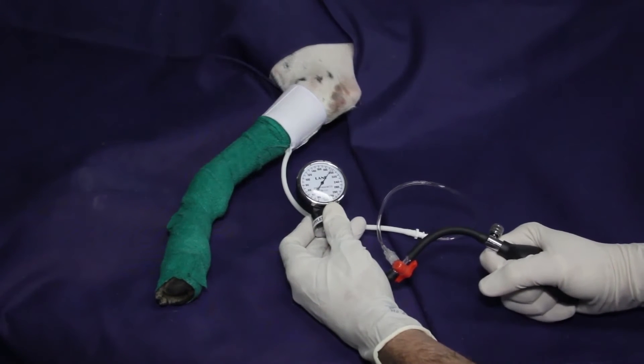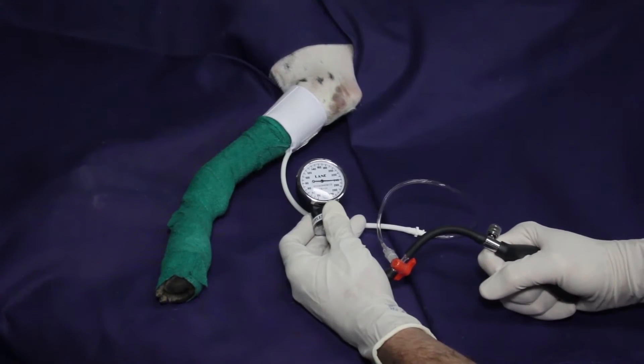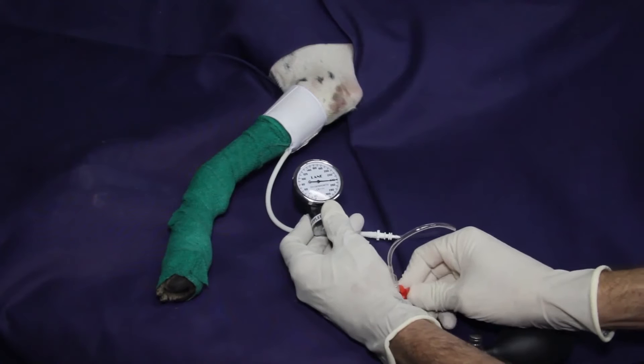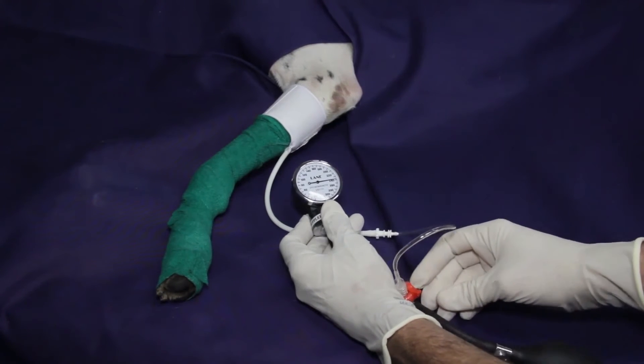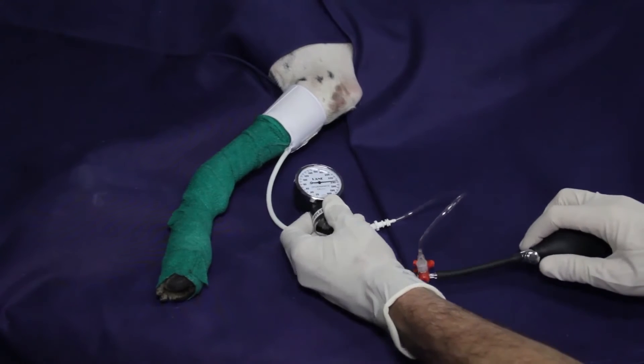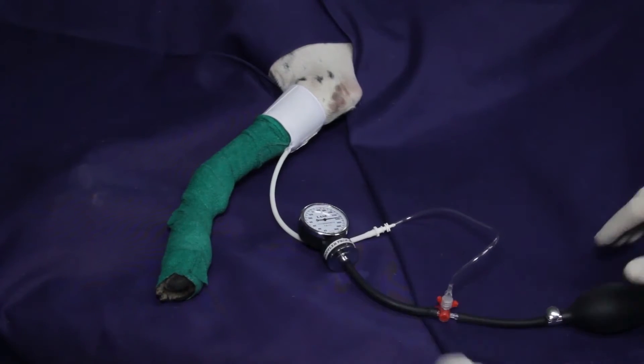The cuff pressure should be 50 mmHg above the systolic blood pressure to ensure adequate occlusion. The elastic bandage is removed, and 2.5 to 5 mg of 1% lidocaine without epinephrine is injected slowly.